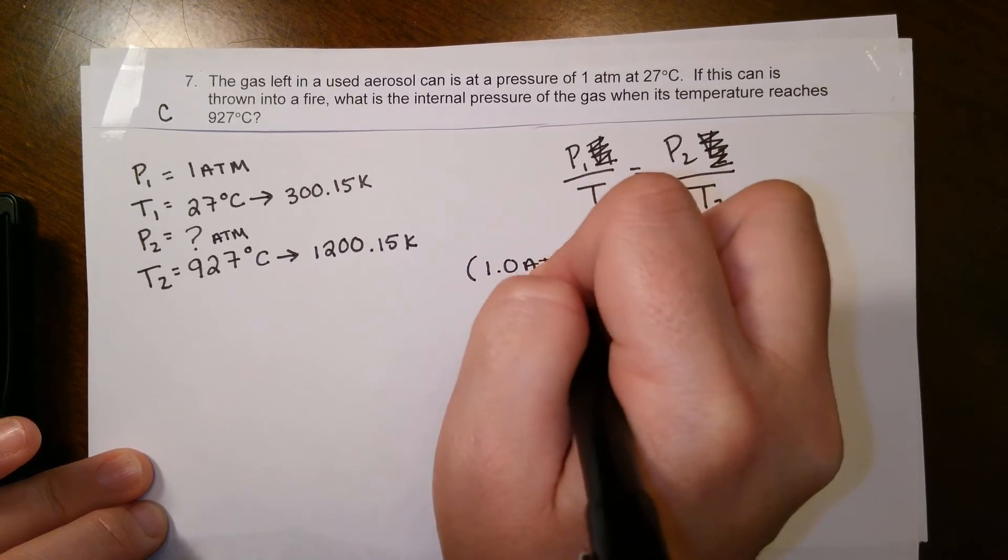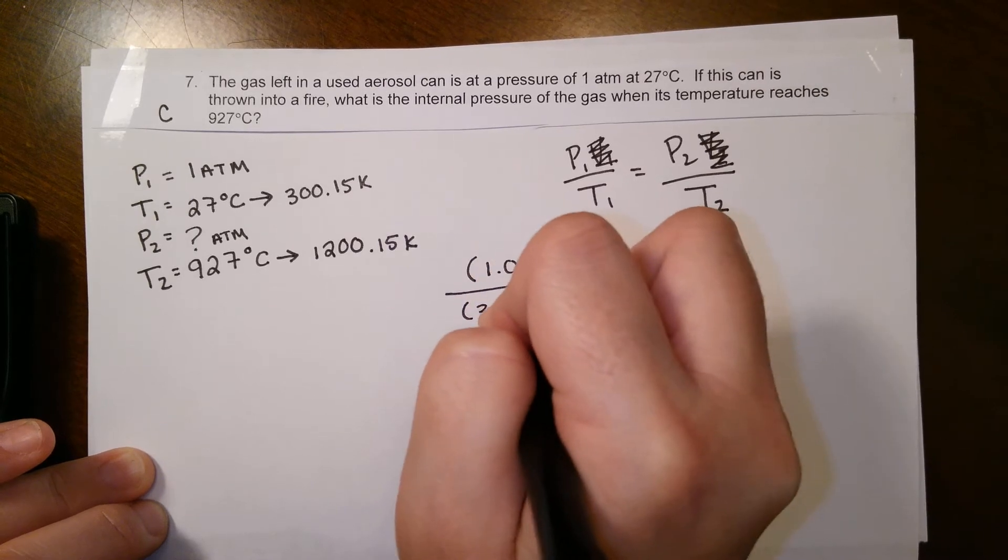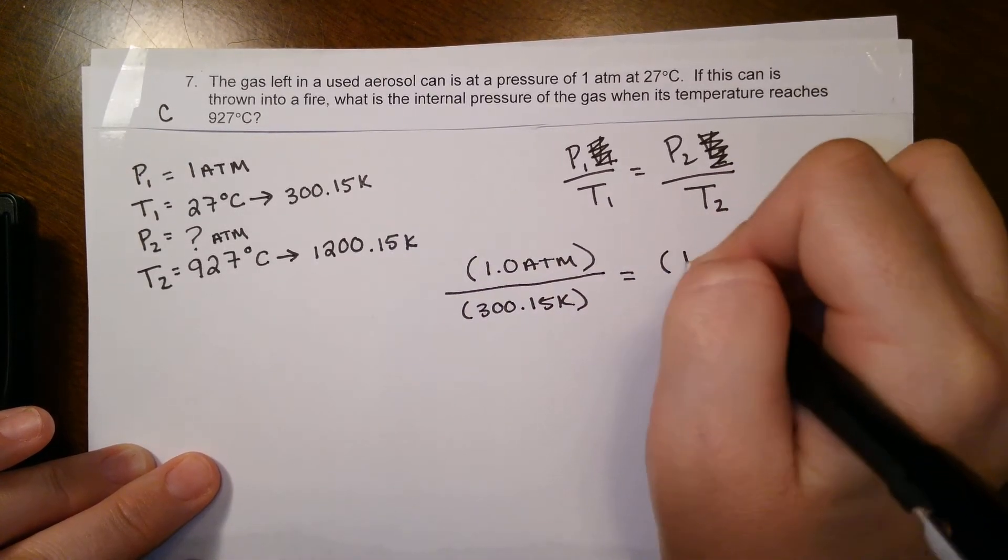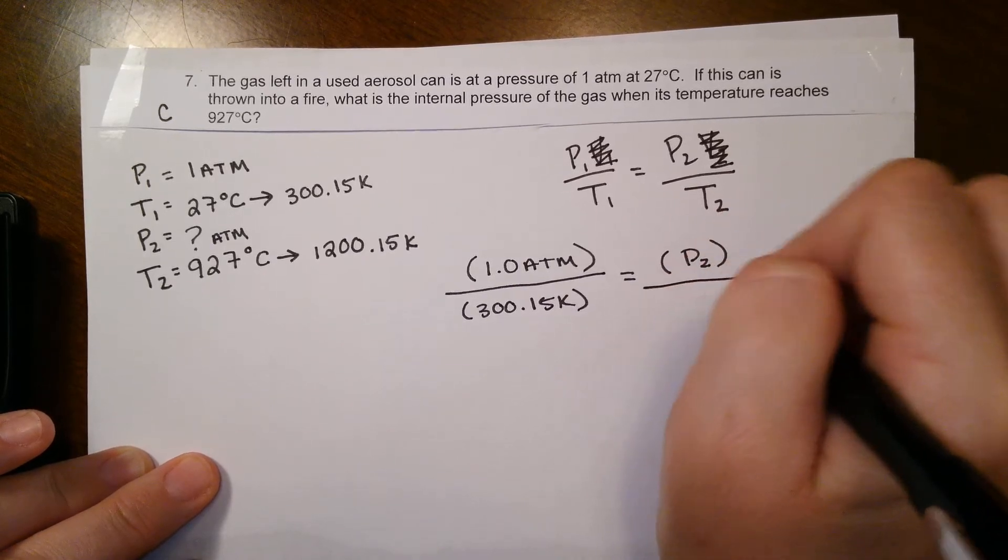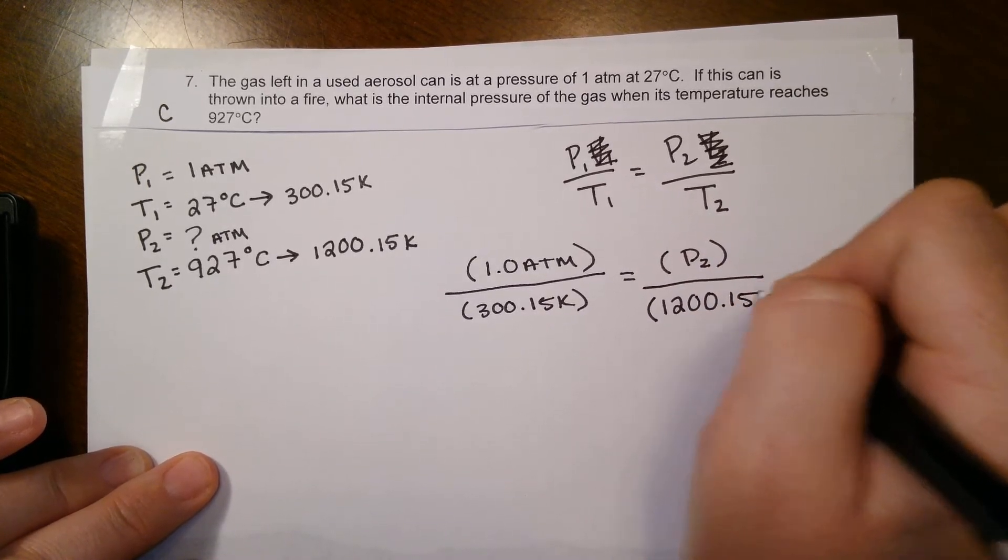1.0 atm over that temperature in Kelvin, so 300.15 Kelvin, equals P2, that's our unknown, over T2, 1200.15 Kelvin.